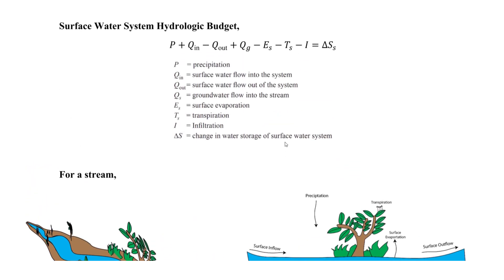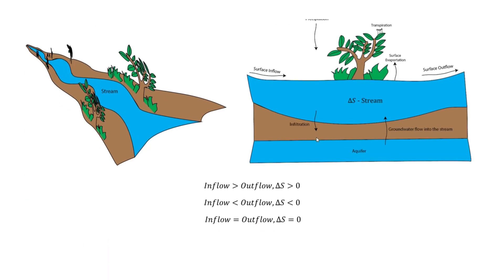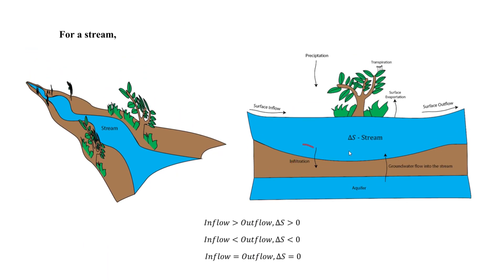The outflows are negative: Q_out is the surface water flow out of the system, E_s is surface evaporation, T_s is transpiration, and I is infiltration. Surface evaporation is negative — it comes out. Evaporation can be from the surface or from the soil, where water in the soil changes to a gas as the ground surface warms up.